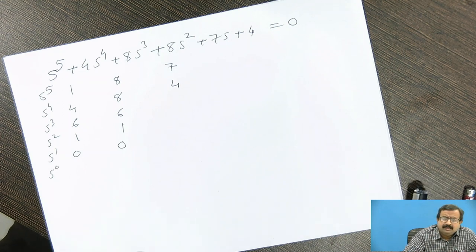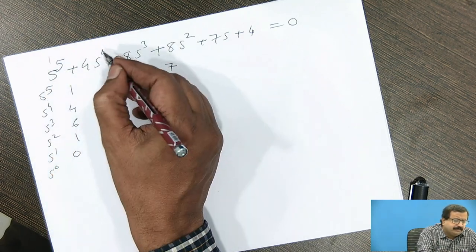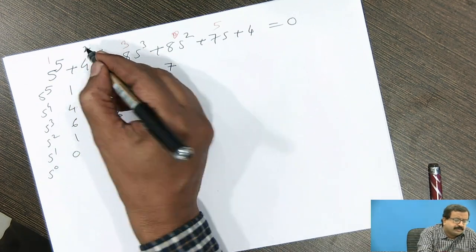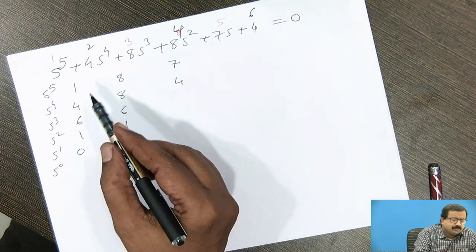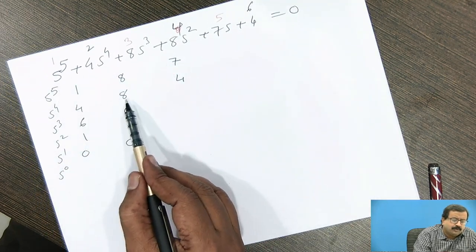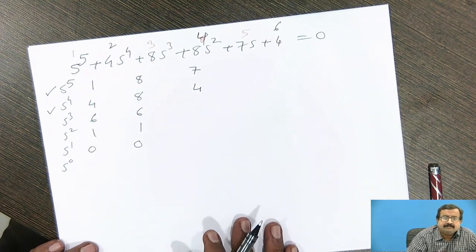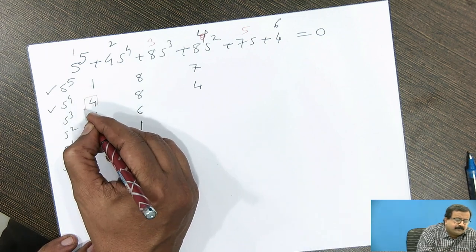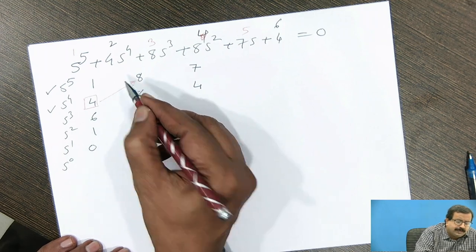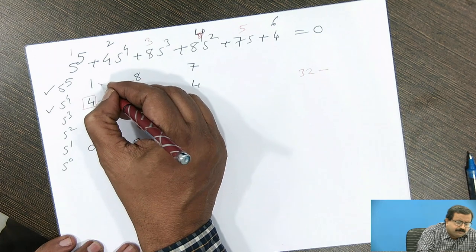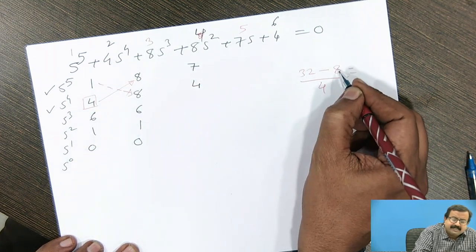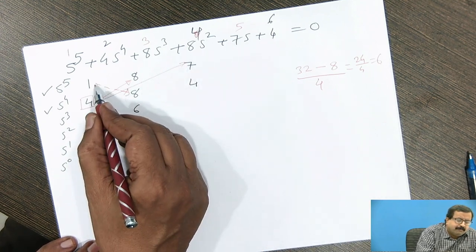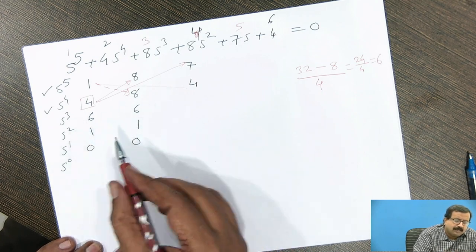Once again, for revision: all odd-numbered terms are written in the first row — the first, third, and fifth terms — and even-numbered terms in the second row — the second, fourth, and sixth terms. So the odd terms give us 1, 8, 7 and the even terms give us 4, 8, 7. With these two rows we form the third row. Using the pivot element: 4×8 − 1×8 = 24, divided by 4 gives 6. Similarly, 4×7 − 1×4×... gives 6. So the third row is 6 and 6.